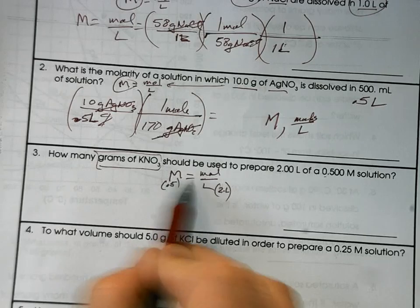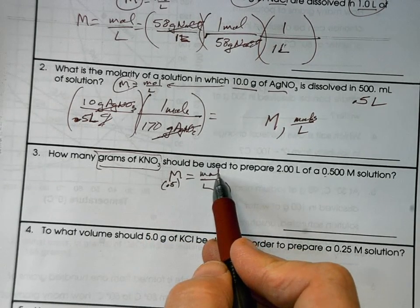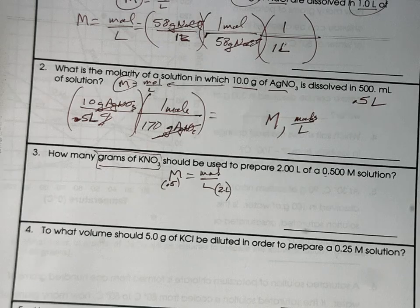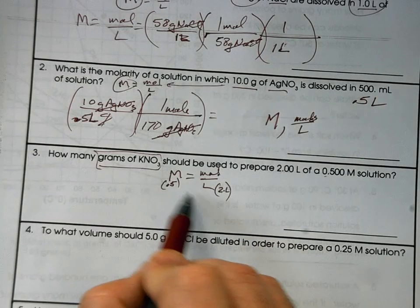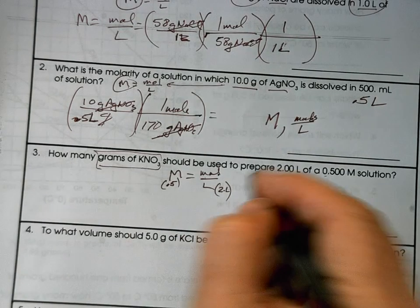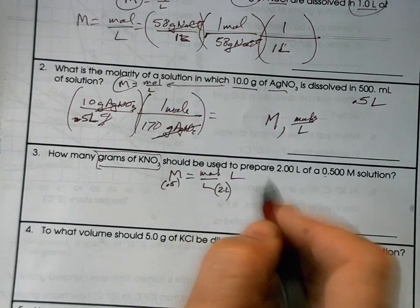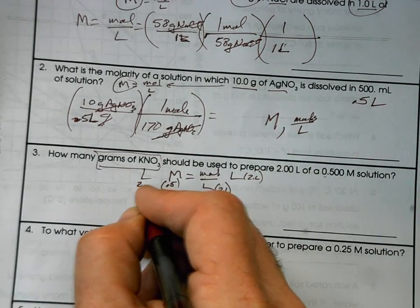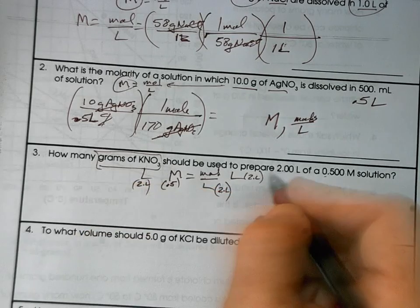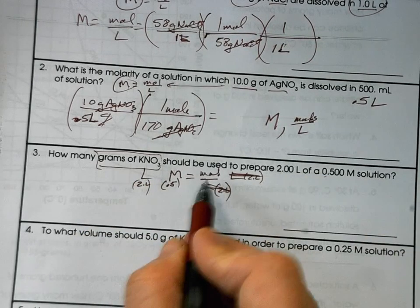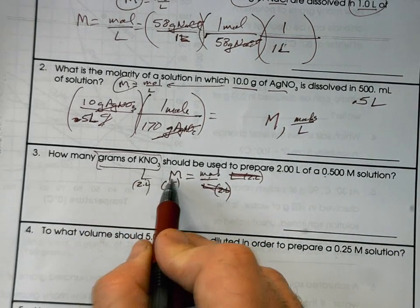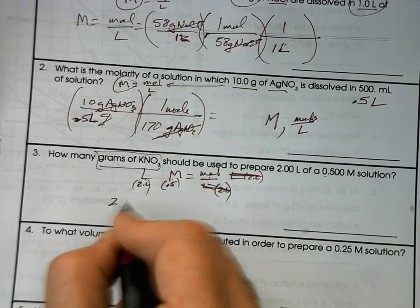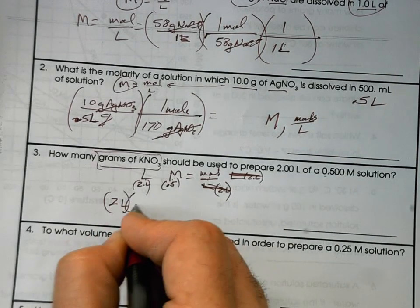So we can rearrange this equation to get moles. And then we can convert it into grams. So if we want to get this rearranged, we need to get the L out of the bottom. I'm going to multiply both sides of this equation by L. We know that that is 2 liters. I'll just say 2 liters here. Okay, the L's will cancel out. So moles is going to be equal to liters times molarity. So what is... We got 2 liters times 0.5. Now I'm going to put mole over liter.